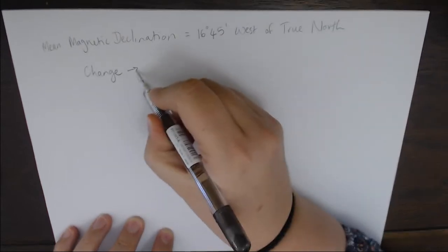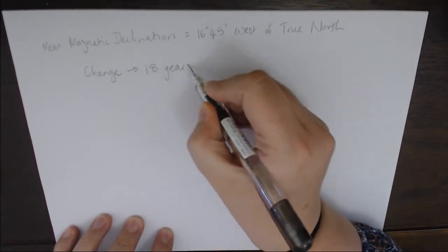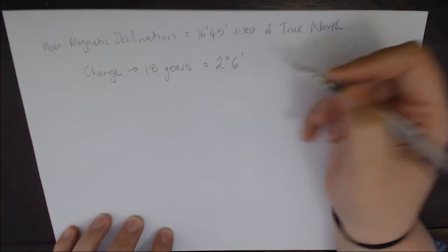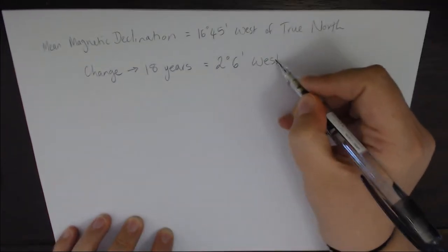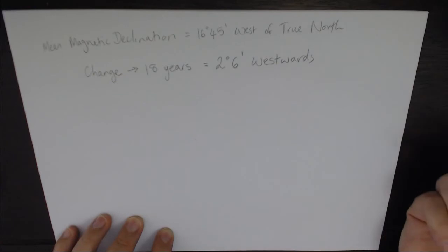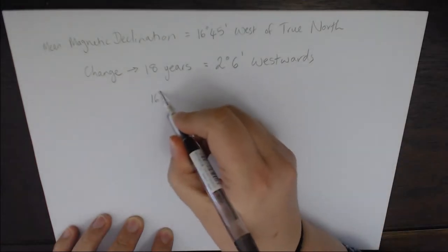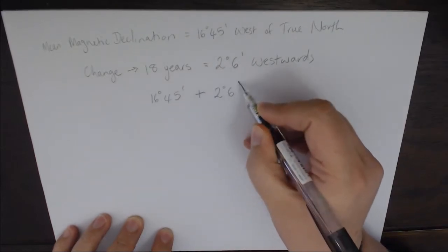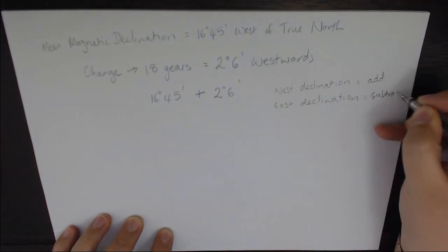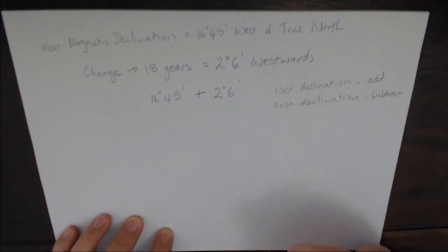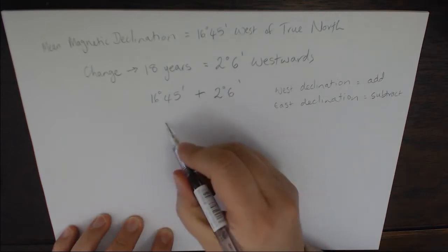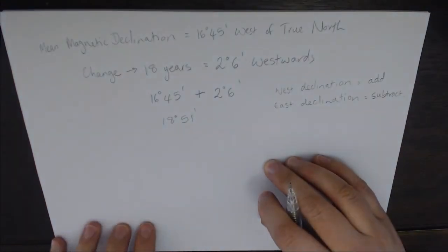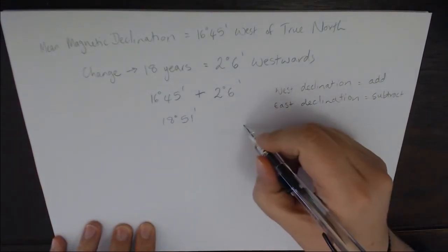We have those two pieces of information and we have calculated that over the course of 18 years. So 18 years will give us a 2 degree and 6 minute westward change. That westward is very important because that's going to tell us whether we're going to add or subtract. Let's take our 16 degrees 45 minutes and add the 2 degrees and 6 minutes because we are westwards of the declination. Westward declination you add, eastward declination you subtract. If we add those two together it's 18 degrees 51 minutes.